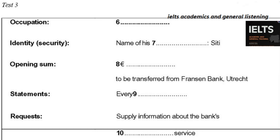And how much would you like to open your account with? We usually ask for a minimum sum of fifty pounds — that's about seventy-five euros. Well, I'm going to transfer two thousand euros from my Dutch account, just till I get paid. I wanted to ask about that — what's the best way to do it? It depends which bank you're with. It's the Franzen Bank in Utrecht. Okay, I'll check if we have links with them — we can do a direct transfer. How often would you like to receive statements?